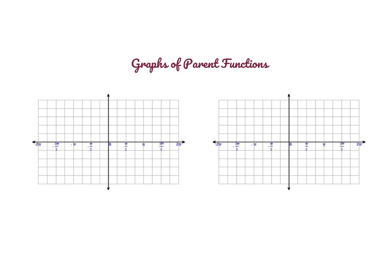Let's start by doing some parent function graphs. We'll start on the left by graphing f of x equals cosecant of x. When graphing cosecant, I'm actually going to start by graphing sine of x, whose period is 2π and amplitude is 1. So I'm going to plot my points in my four regions. Sine always starts in the middle at the origin, then we go up to the maximum, back to the middle, down to the minimum, and back to the middle. I'm doing this really lightly because it's simply a guideline.